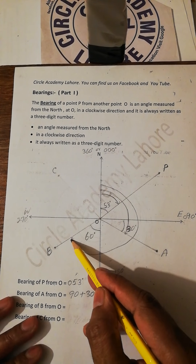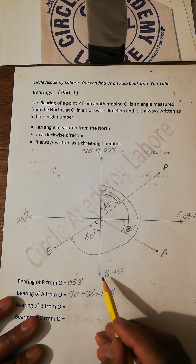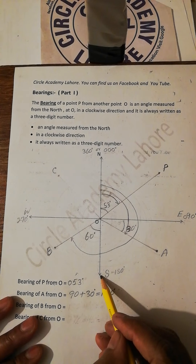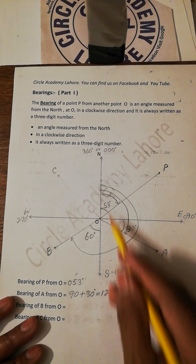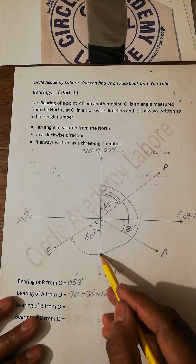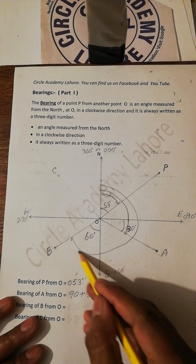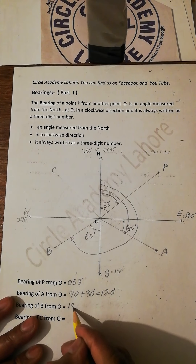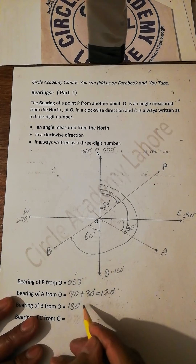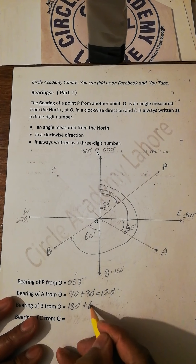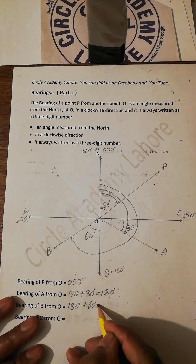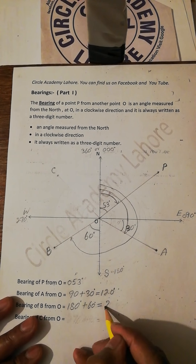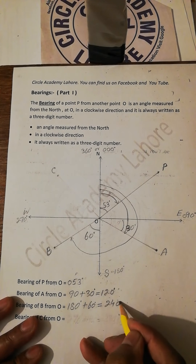The bearing of south from north is 180. So 180 degrees plus 60 degrees equals 240 degrees.